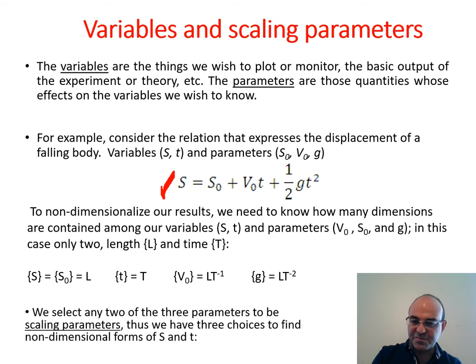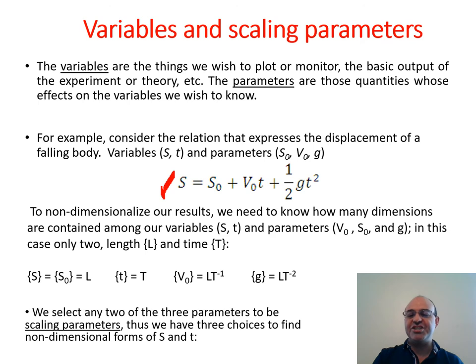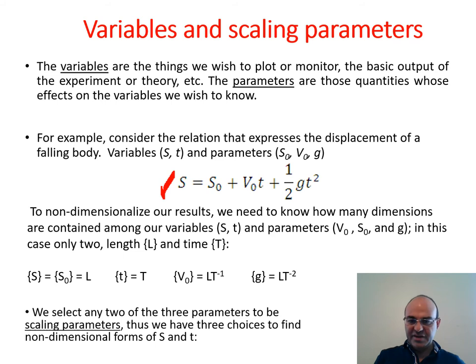The dimension of S is length (unit: meter), and the dimension of all other combined terms is also length L. In this equation, T is the independent variable and S is the dependent variable. S₀, V₀, and G are constants — they are kept constant, so they are called parameters. So in this equation we have parameters S₀, V₀, and G; independent variable time T; and dependent variable S.